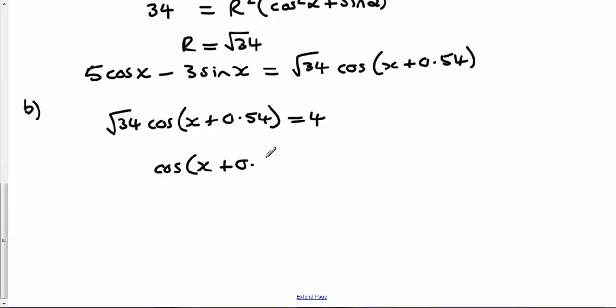Dividing both sides by root 34 and then doing arc cos of that value of 4 over root 34, it turns out that x turns out to be 0.2744.